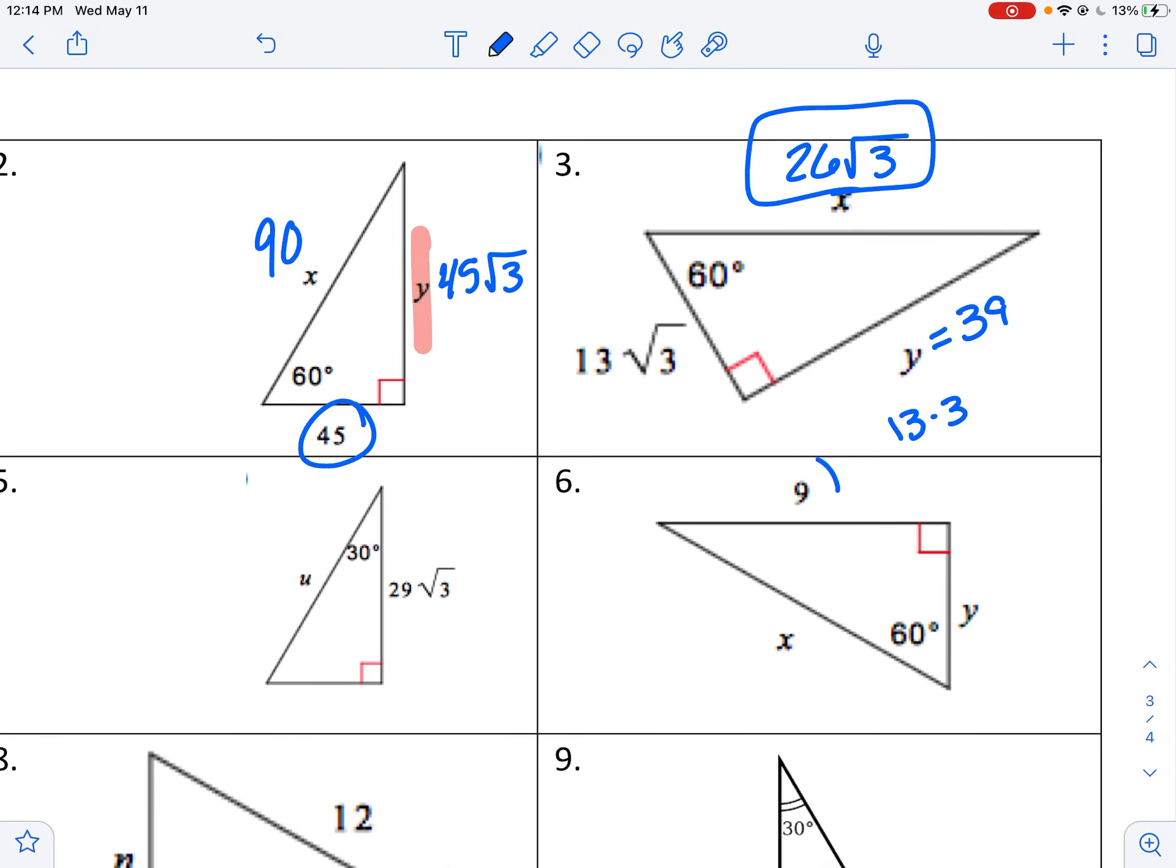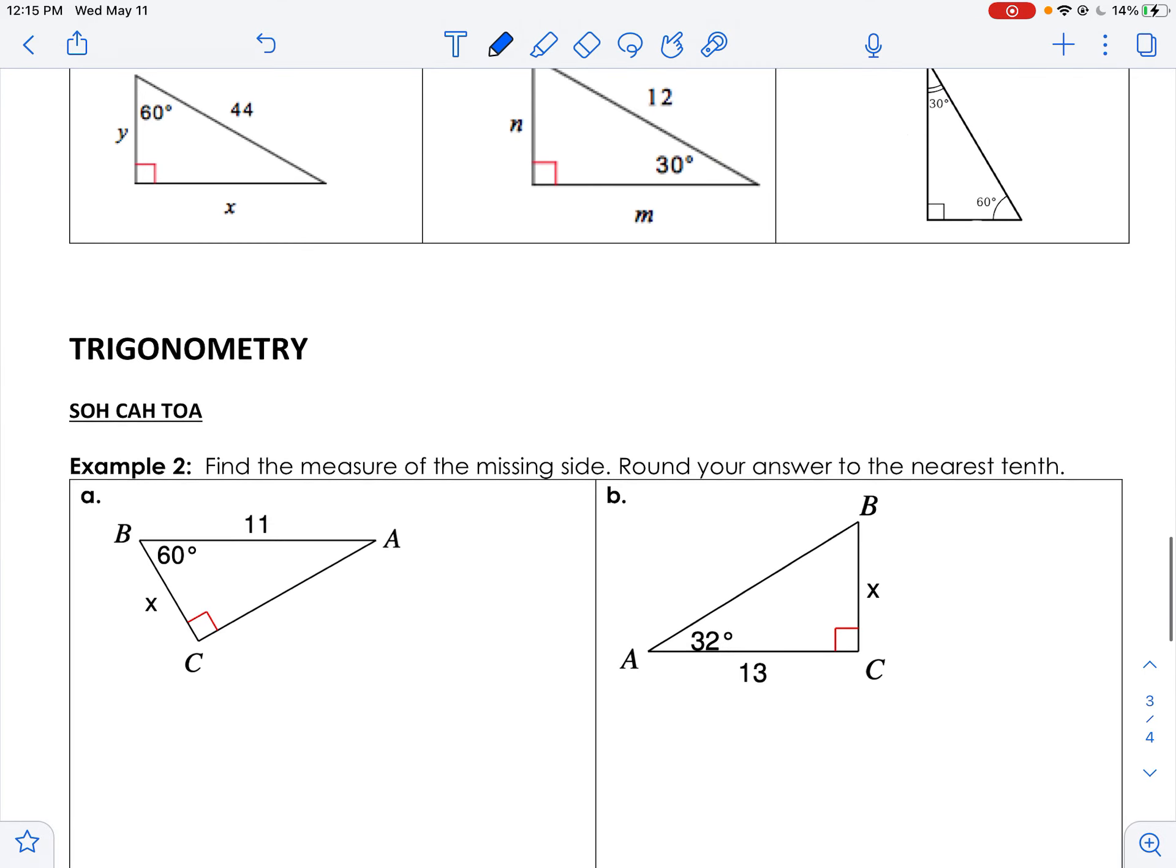Same idea here. On 6, I gave you the side across from 60. Usually it has a root 3 on it, but here it does not. So if I wanted to find out what y is, I would have to divide by the square root of 3, and that would get me 3 root 3 if I were to simplify. And then of course that would be 6 root 3.